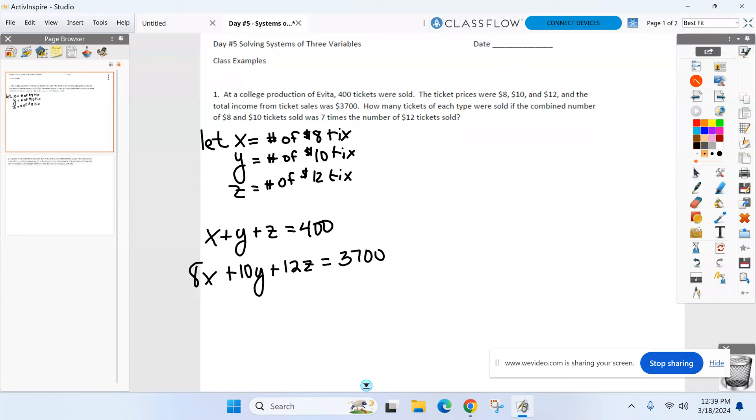Money stays with money. So $8 we attach to the X. The 10 we attach to Y. And the 12 we attach to Z. And how much money did I make total? $3,700. So far, it kind of looks like those problems we did before the quiz with an extra letter. Now we need a third equation. And that comes from our last sentence. The combined number of $8 and $10 tickets sold was seven times the number of $12 tickets.